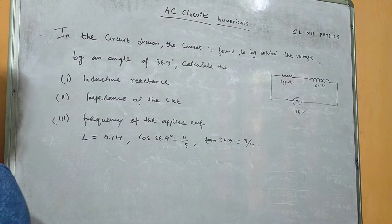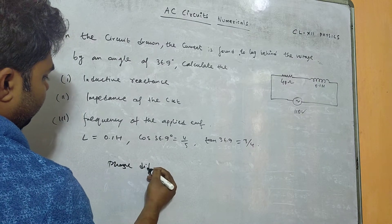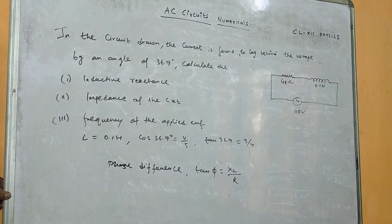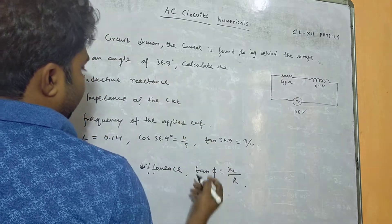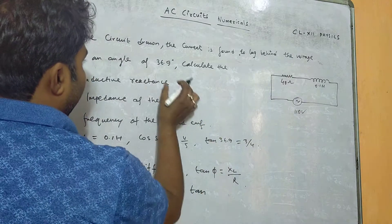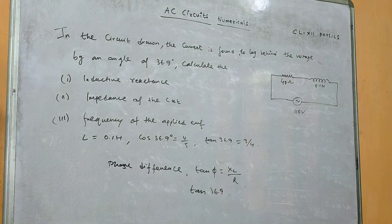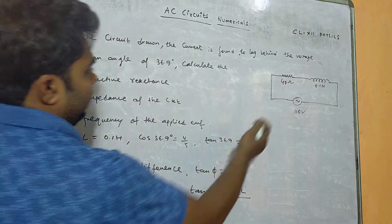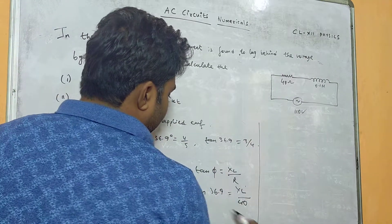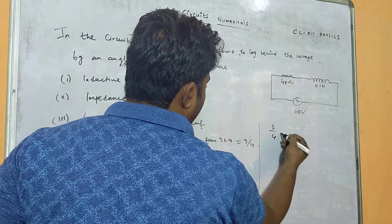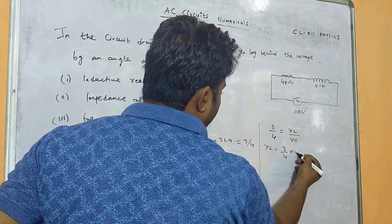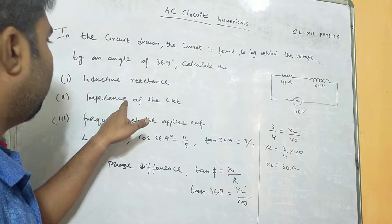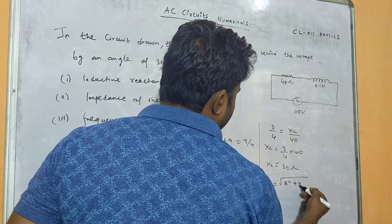We know the phase difference formula: tan φ equals XL over R. Substituting, tan 36.9 equals XL divided by R, where R is given as 40 ohm. The value of tan 36.9 is 3 by 4, so 3 by 4 equals XL over 40. Therefore XL equals 3 by 4 into 40, giving XL equals 30 ohm.